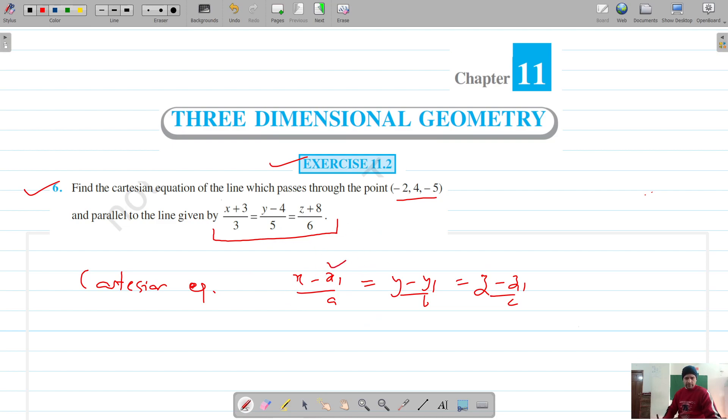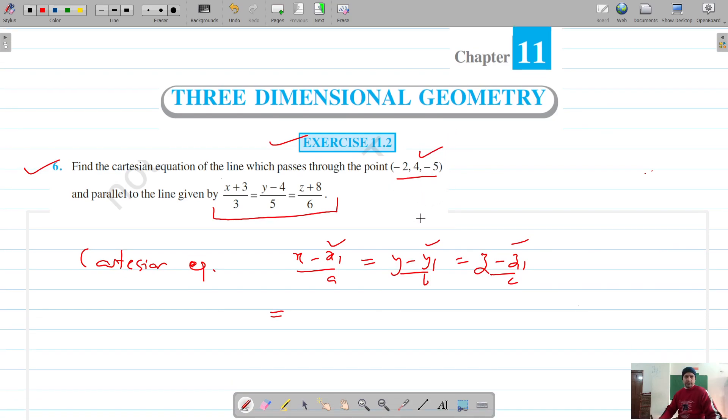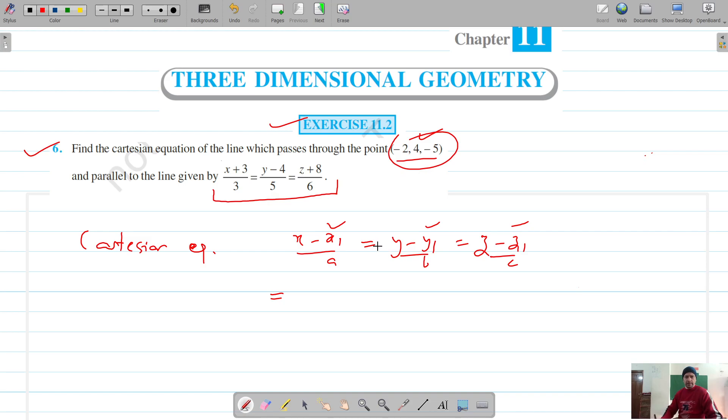These x1, y1 and z1 are the coordinates of the point through which the line passes. These are minus 2, so these are our x1, y1 and z1. Let's put them: x minus minus 2 equals y minus 4 equals z minus minus 5.